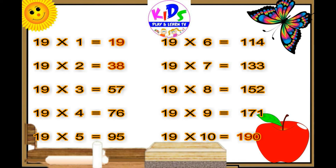Nineteen sixes are one hundred and fourteen. Nineteen sevens are one hundred and thirty-three. Nineteen eights are one hundred and fifty-two. Nineteen nines are one hundred and seventy-one. Nineteen tens are one hundred and ninety.